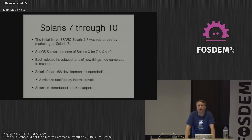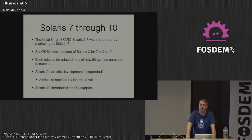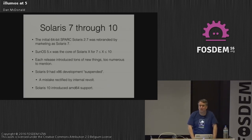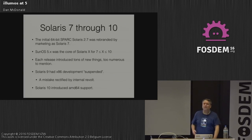Solaris 9 had x86 development suspended, which caused a revolt among customers and internal people, so we pushed it back for one of the Solaris 9 updates. Solaris 10 then introduced 64-bit AMD support.